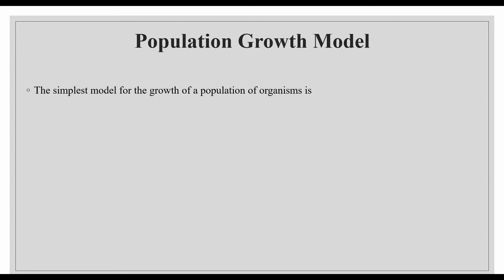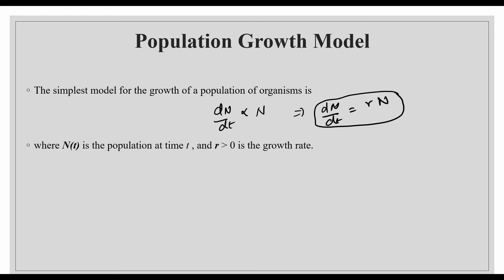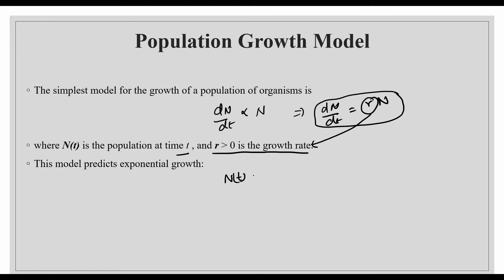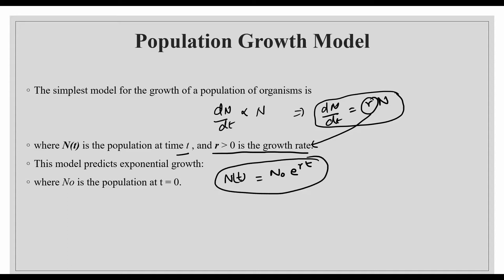The simplest model for population growth is exponential growth. The rate of change of population is directly proportional to the population at that instant. Removing the proportionality sign gives the simplest differential equation, where N(t) represents the population at time t and r is the growth rate. Solving this differential equation predicts that population growth will be exponential — N(t) = N₀·e^(rt) — where N₀ is the population at t=0. This implies the population will grow infinitely, which is not realistic.